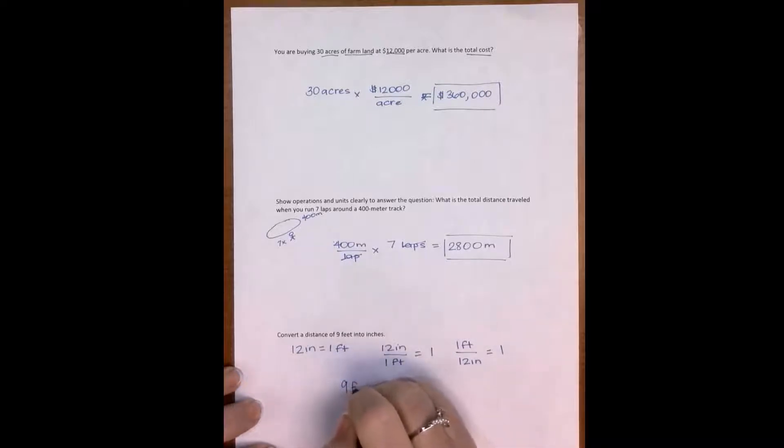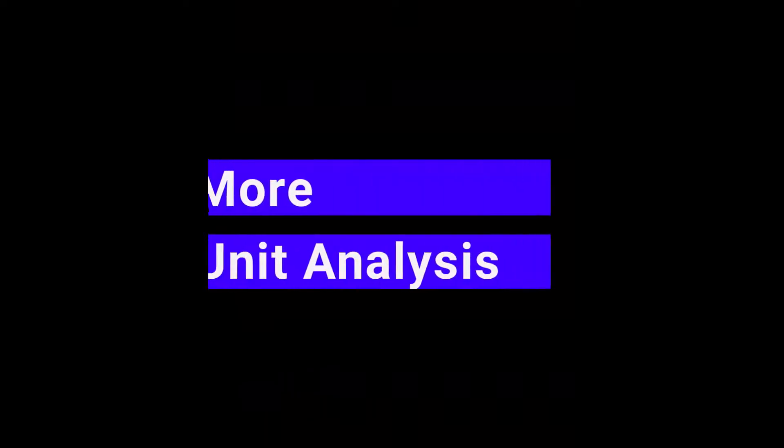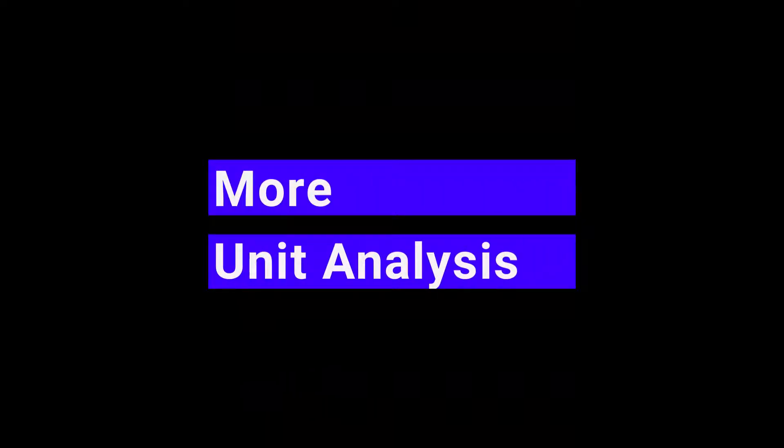So I have nine feet and I want to know how many inches it is. I need to put feet on the bottom in my conversion. So I do one foot, 12 inches. Nine times 12 is 108. So I'm going to go back and check my units. I have feet here in the numerator, feet here in the denominator. They cancel out and I'm left with inches.